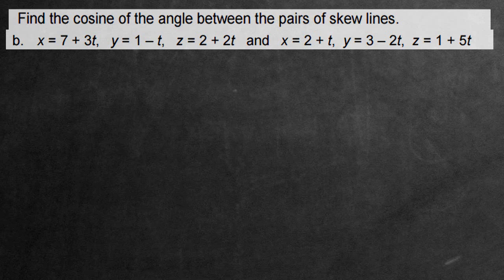Hi, in this video we're going to be solving the following problem: find the cosine of the angle between the pairs of skew lines. So we have two skew lines here, this one and this one over here, and we're asked to find the cosine of the angle, or just the angle if you want to find that first.